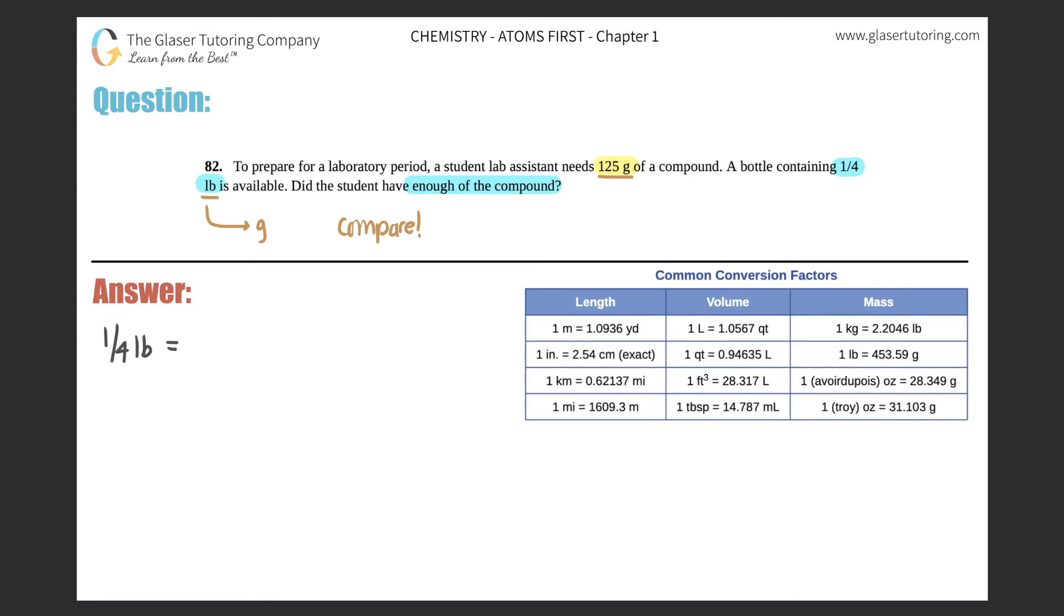Now they tell me that it's one-fourth pound, but I don't like to use fractions, so I would just divide that out. I know that one-fourth of a pound is equal to 0.25 pounds.